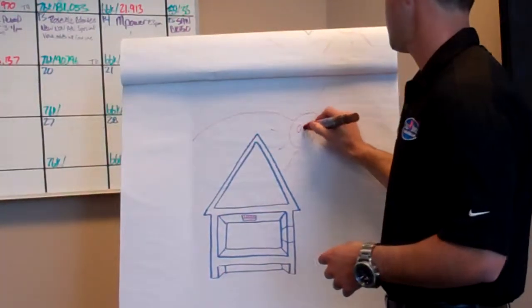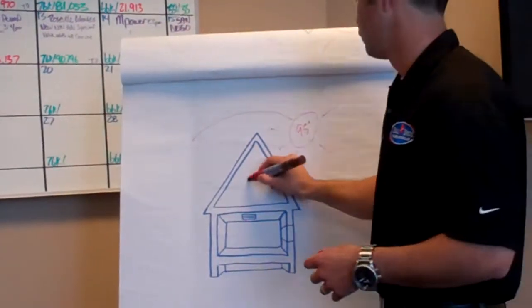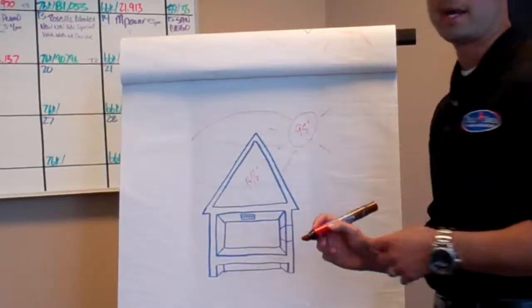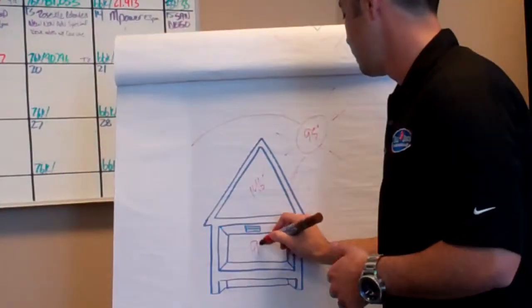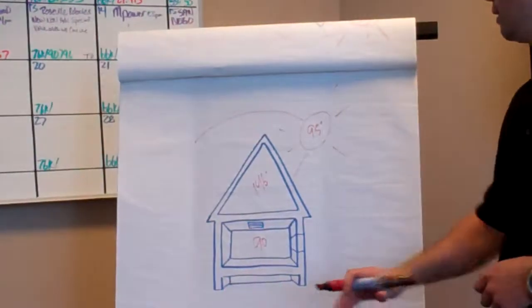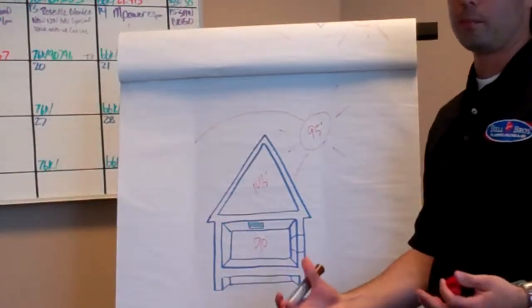So, if it's 95 degrees outside, it's about 146 degrees inside your attic. Now, heat is a pressure, it's going to want to go into a lower pressure. So, even if your house is going to be 90 degrees inside, that heat from the attic is going to come inside.